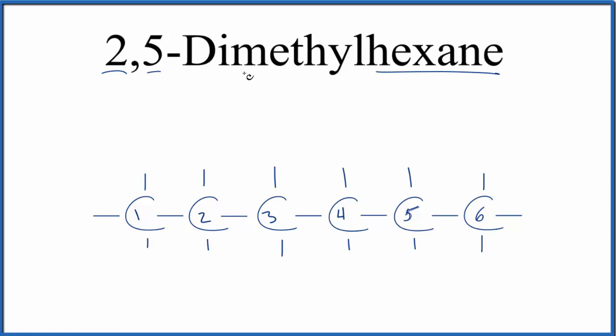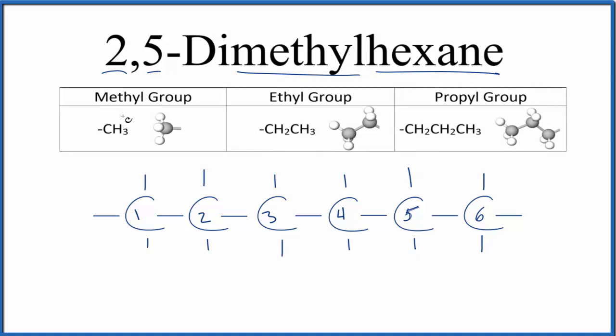Next we have methyl. Methyl looks like this. For the methyl, it's CH3. So we're going to put a methyl group on the second and the fifth carbon here in our hexane chain. That di means we have two. So on the second and on the fifth, that's where we put the CH3.